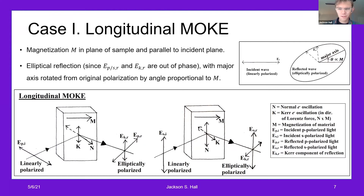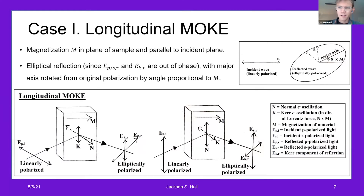A similar idea applies to S-polarized incident light, shown on the right. The key takeaway from the diagram on the top right is that the linearly polarized incident wave becomes elliptically polarized, with the electric field tracing out an ellipse over time. The major axis of the ellipse is rotated from the original polarization by an angle proportional to the magnetization. So measuring the angular change in polarization is key to determining the magnetization of the material.